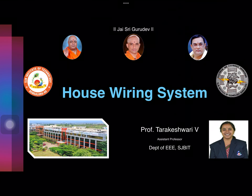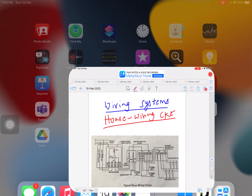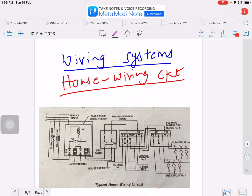Hello everyone, welcome to today's session on house wiring system. I shall give you an introduction about the residential house wiring system. I'm Tara Keshwari from the department at SJPIT. Today we shall talk about the wiring system, especially the house wiring circuit. You can see the typical house wiring circuit shown in the diagram. The wiring system is a network of wires connected from the distribution board for the distribution of electrical energy from the supplier to the consumer.